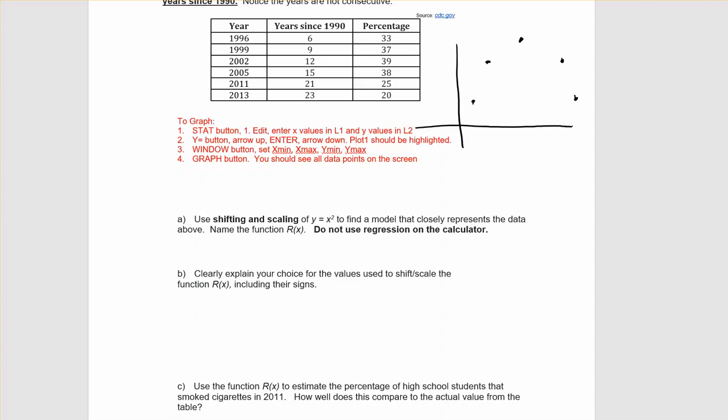we're asked to use shifting and scaling of the square function to find a model that closely represents our data. So what we know, first of all, is that we should be starting with a negative square function since our data is facing downwards. What we also know is that we are going to shift this initially to fit that top point right there, which is the vertex of our parabola.